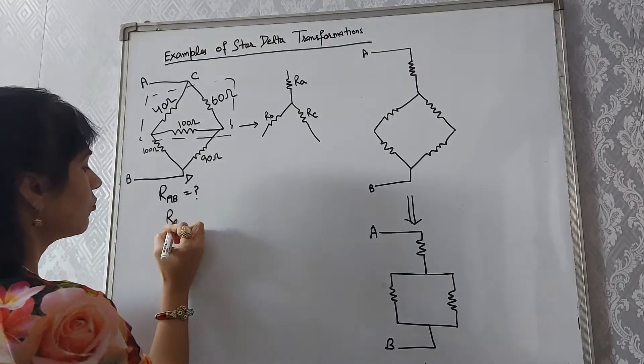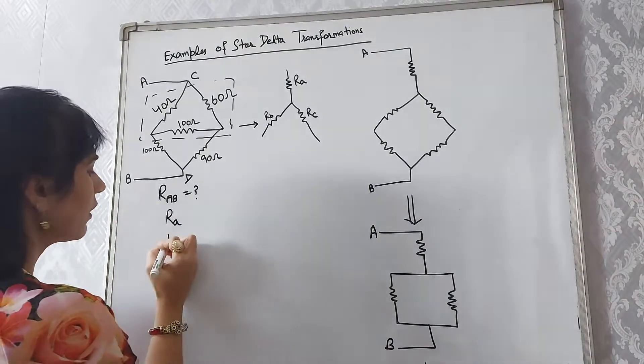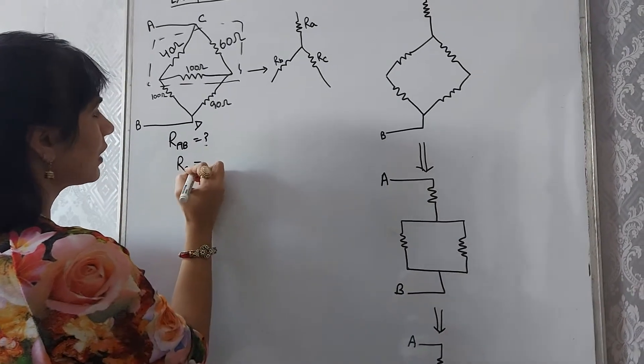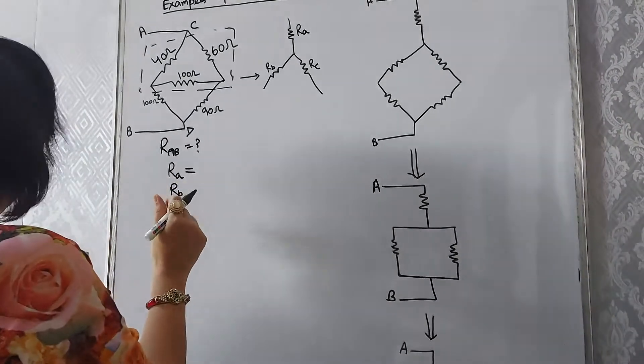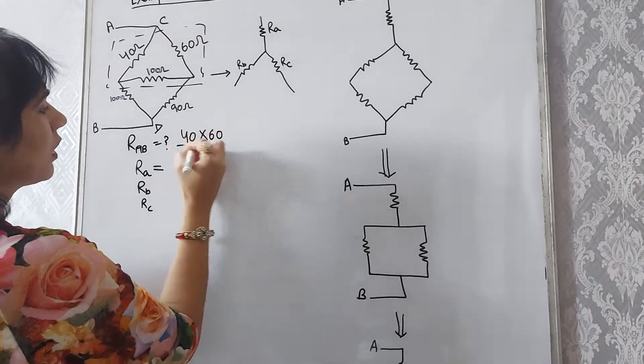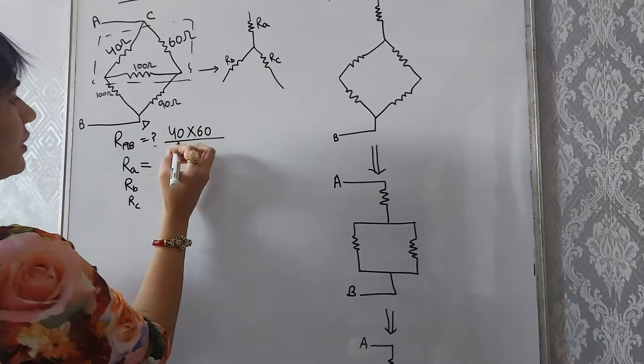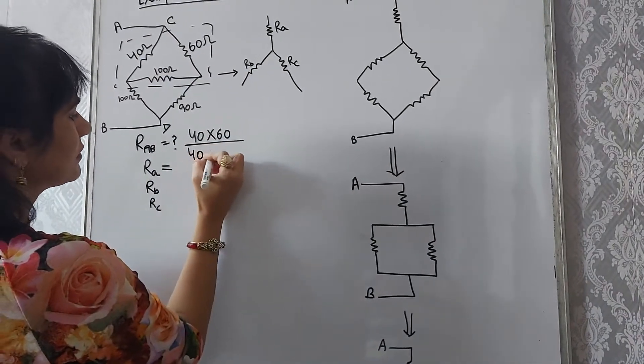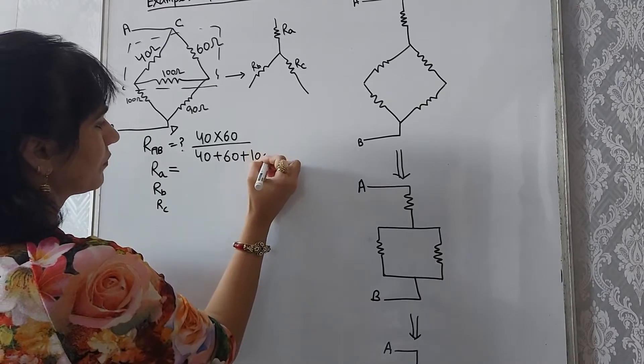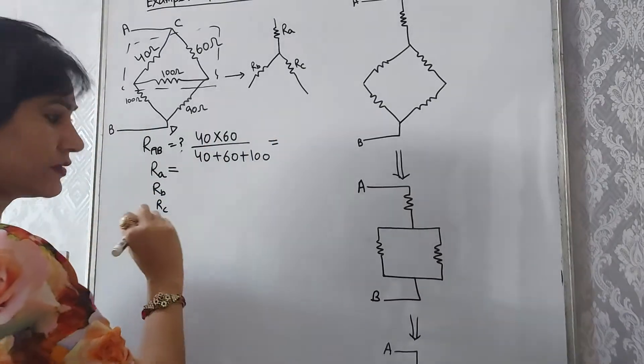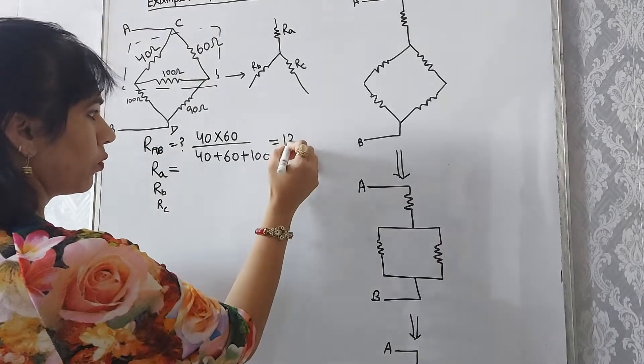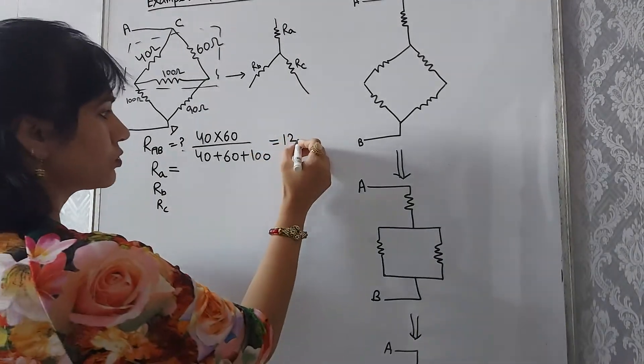From here we find the value of Ra, Rb, and Rc. We know that Ra is equals to 40 into 60 upon the addition of 3 resistances, which is equals to 12 ohm.